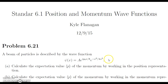Since we know that the function kind of looks like a Gaussian, we already know what these expectation values are going to be from the example in the text. What it wants us to do in part A is to calculate the expectation value of the momentum by working in the position representation, and then in the momentum representation for part B.